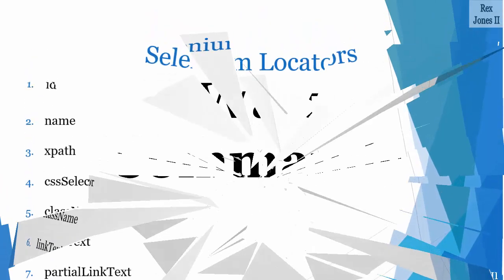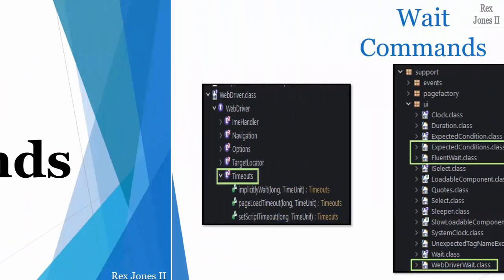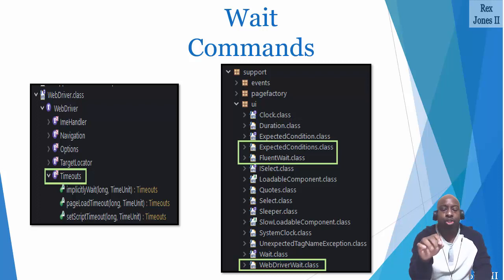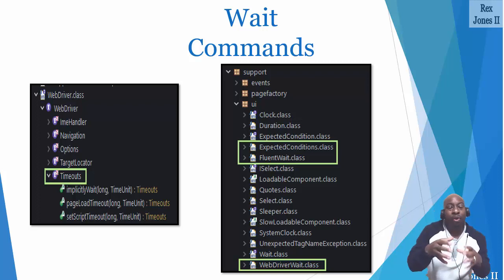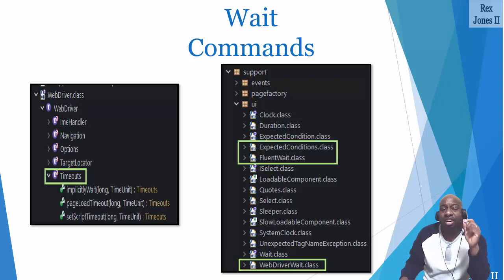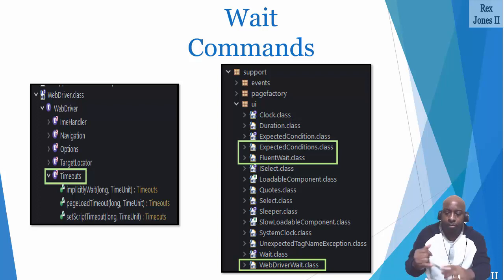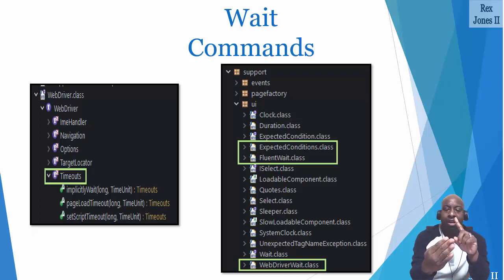Next are the wait commands, which help when our test executes fast — they pause between execution statements. All Selenium wait commands are dynamic, so they wait for a set time to expire or a condition to be met. We should not use Thread.sleep in production code because it is not dynamic, though it can be used in demos and debugging. The wait methods are: implicit wait, page load timeout, set script timeout, explicit wait, and fluent wait.